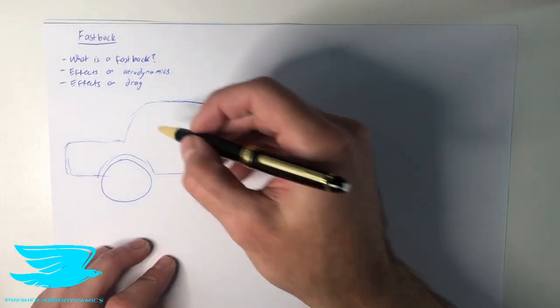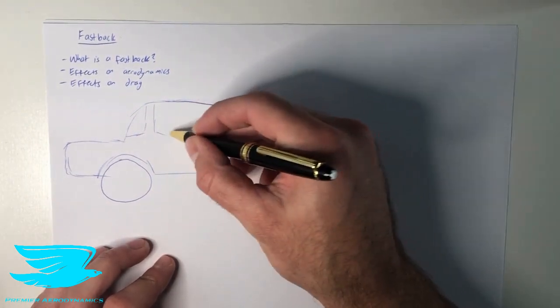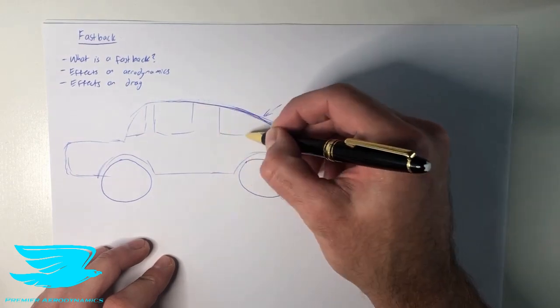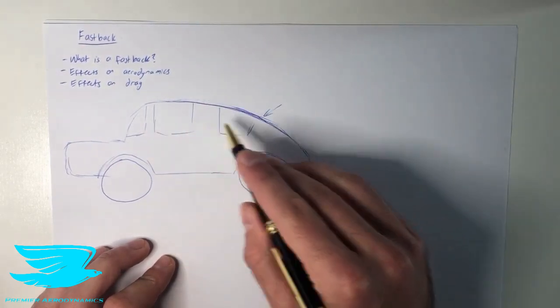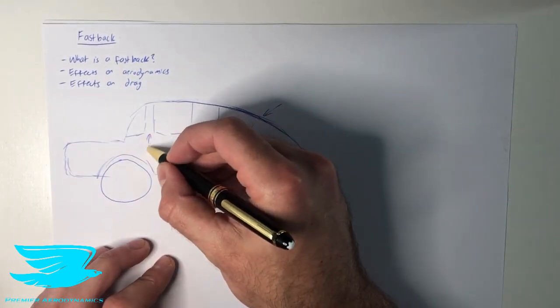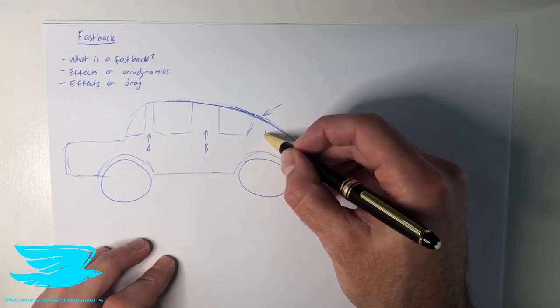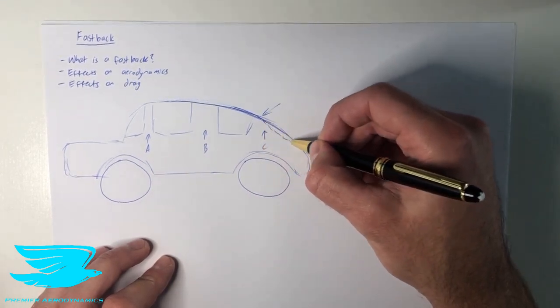So a typical car, and pretty much most passenger cars, have a few windows. And each window is separated by different plastic and metal components. So this is called an A pillar here. This pillar here is called a B pillar. And then we have a C pillar at the back. And then you have the back window here.